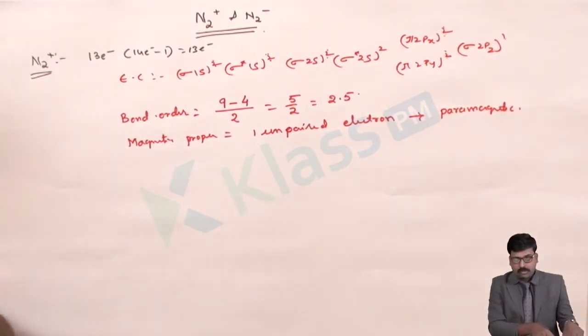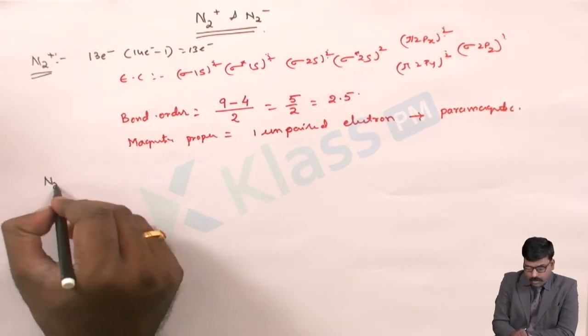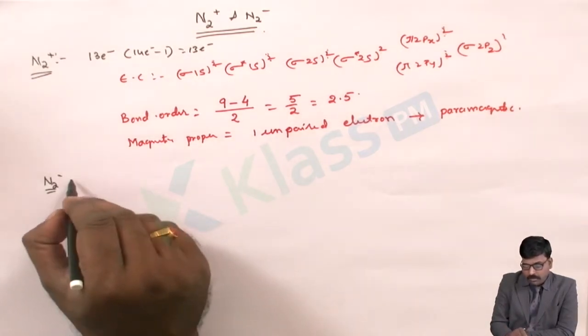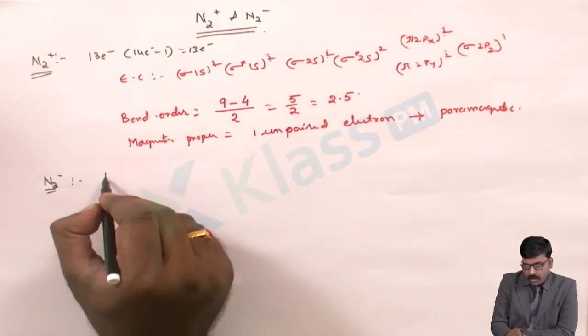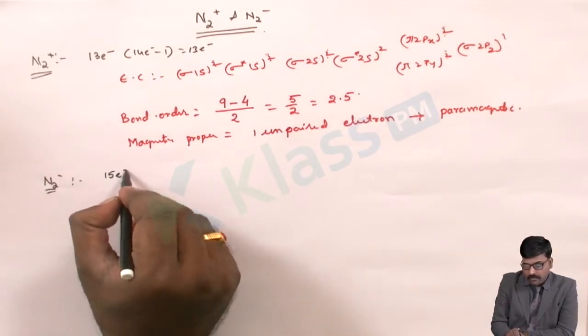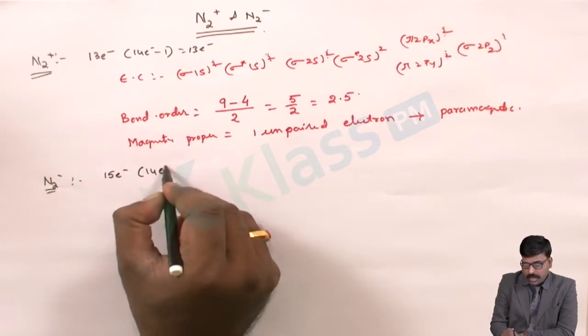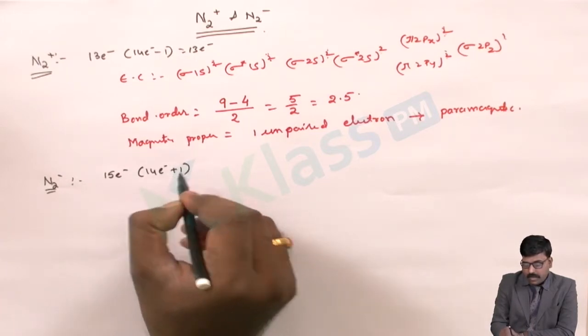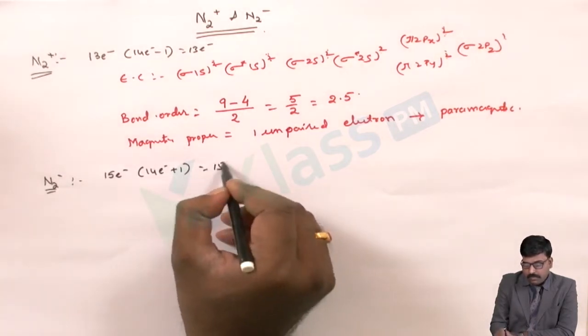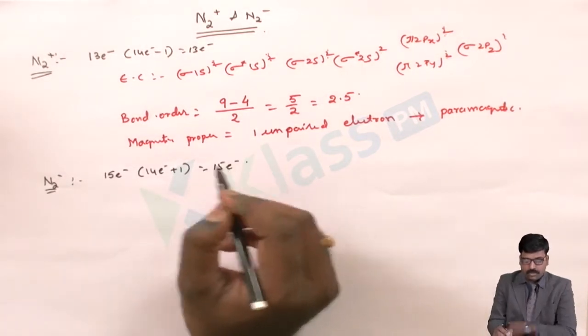Now for N2 minus. N2 minus has altogether 15 electrons, that is 14 electrons plus 1 extra, giving 15 electrons total.